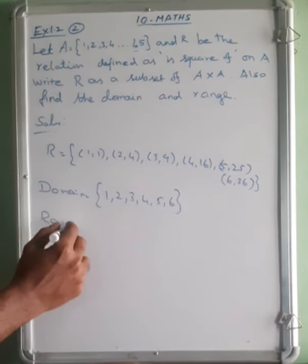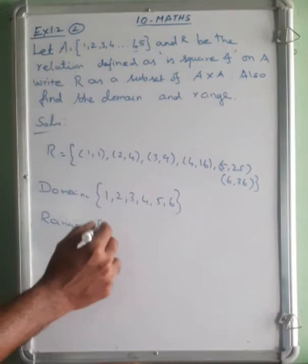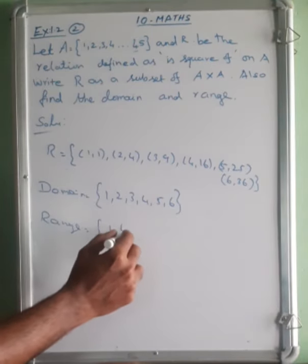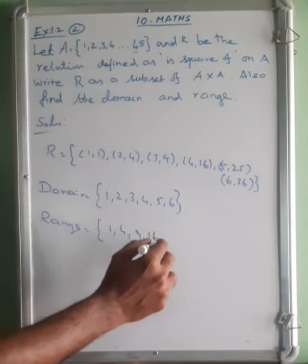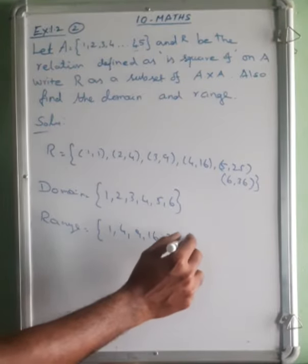Range. Range means order parallel is with second element: 1, 4, 9, 16, 25, 36.